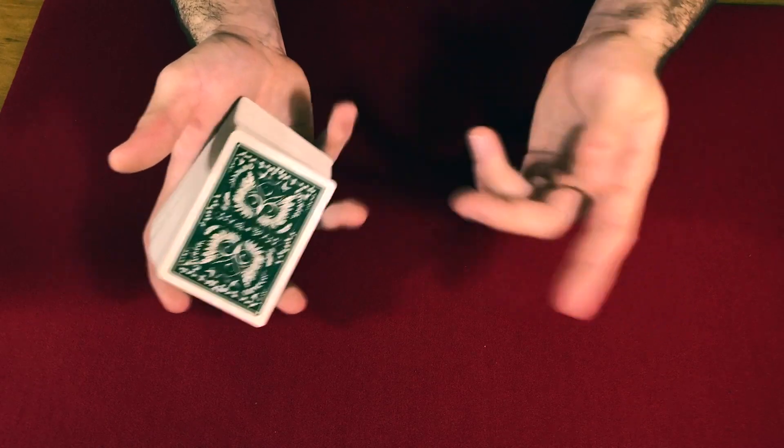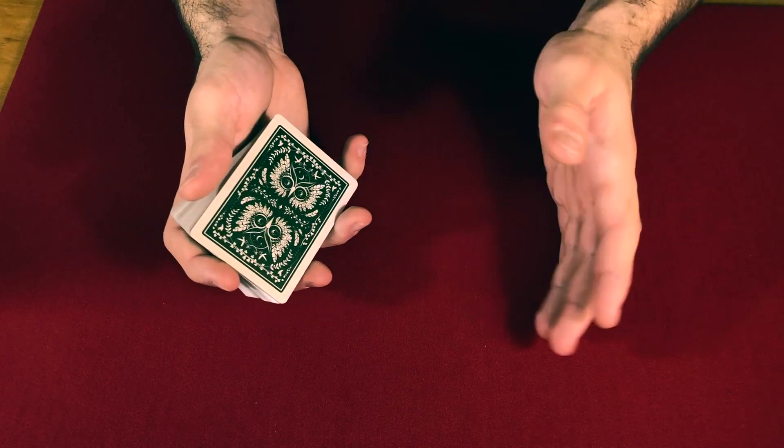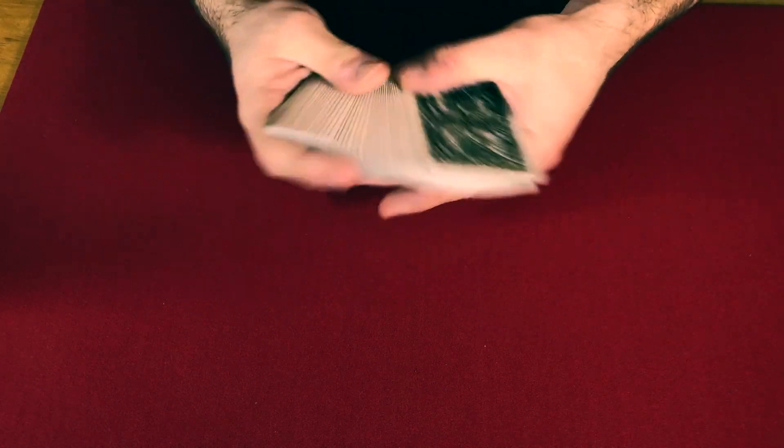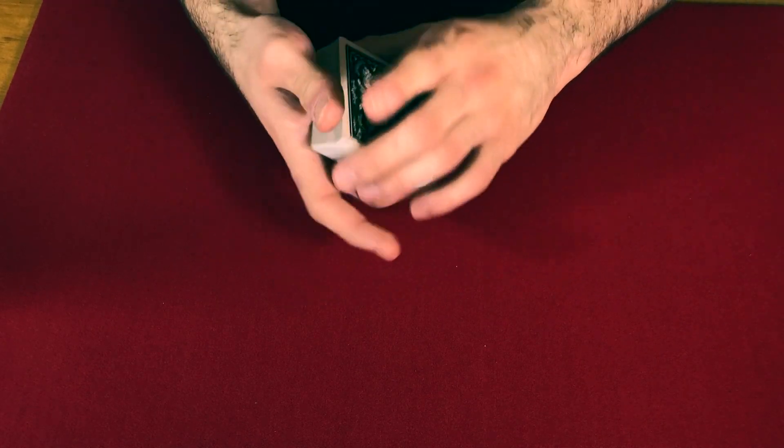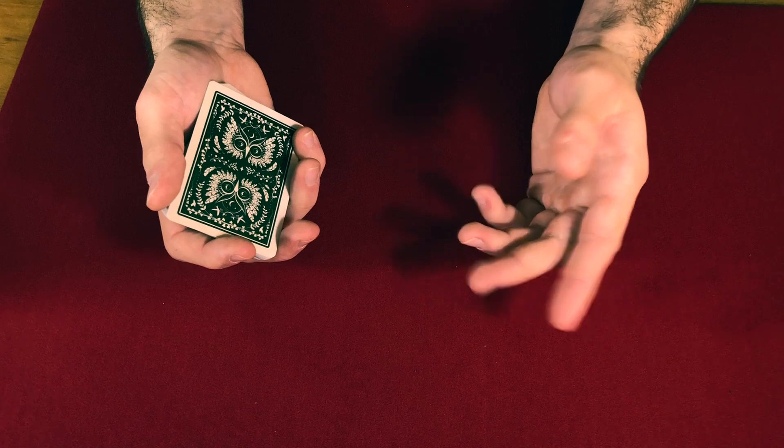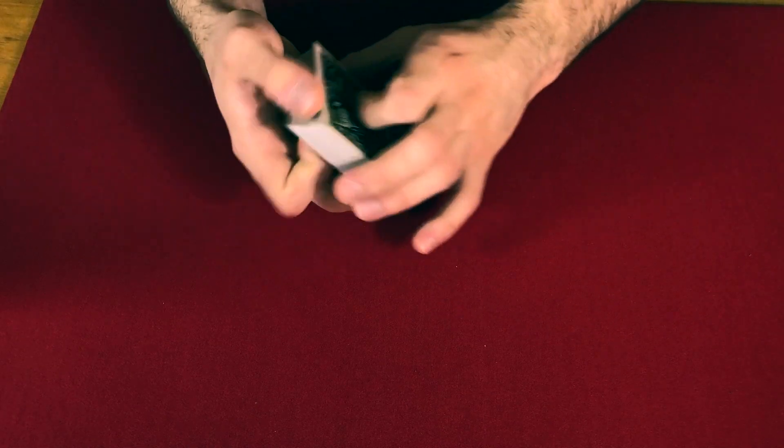So anyway, this is the sandwich effect that apparently happens twice. One time on the table and one time in someone else's hand. Meaning that one time you would spread the card out on the table and the second time you can actually give it to them and they spread them out in their hand and it's really unique.